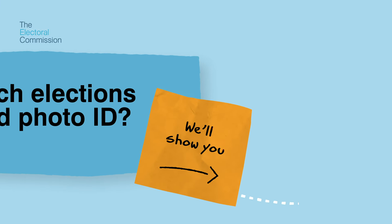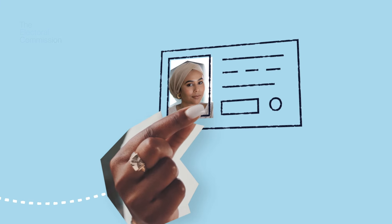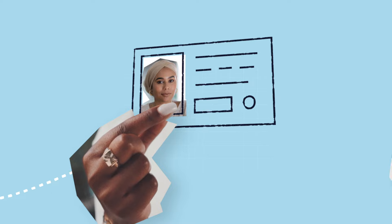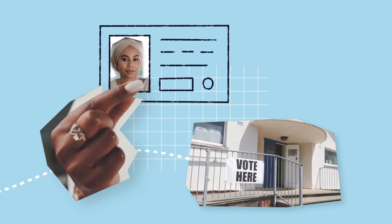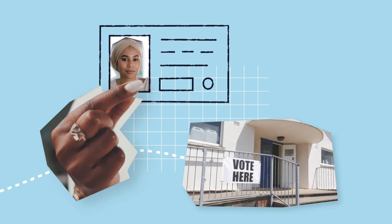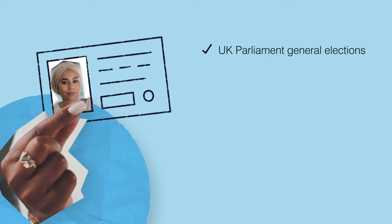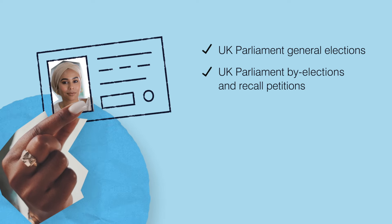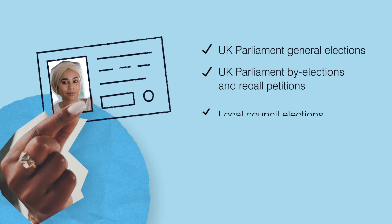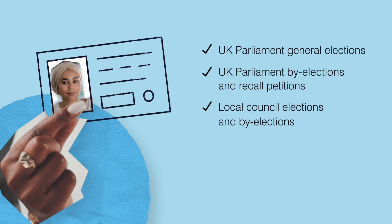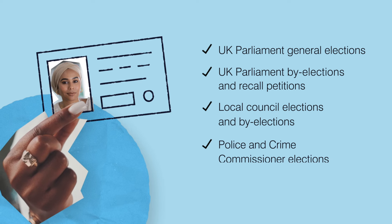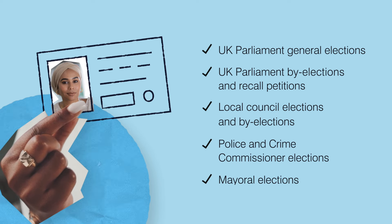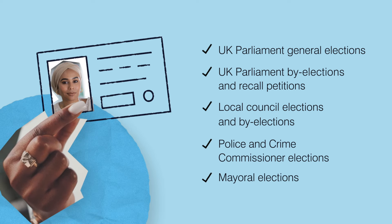In England, voters need to show photo ID at all elections when they vote at a polling station. This applies to UK Parliament general elections, UK Parliament by-elections and recall petitions, local council elections and by-elections, police and crime commissioner elections and mayoral elections.